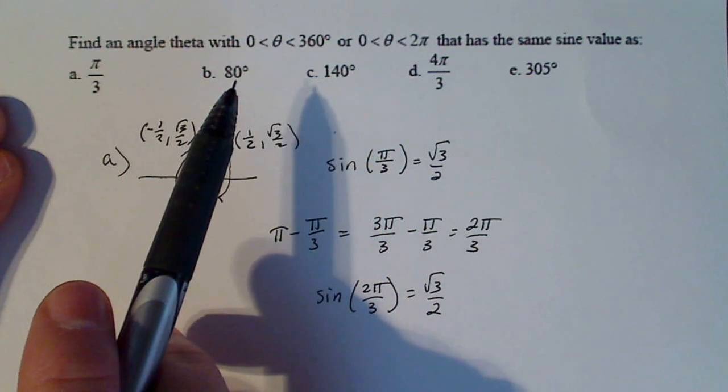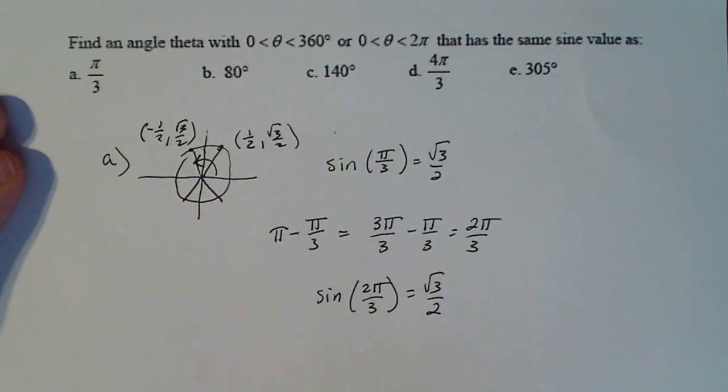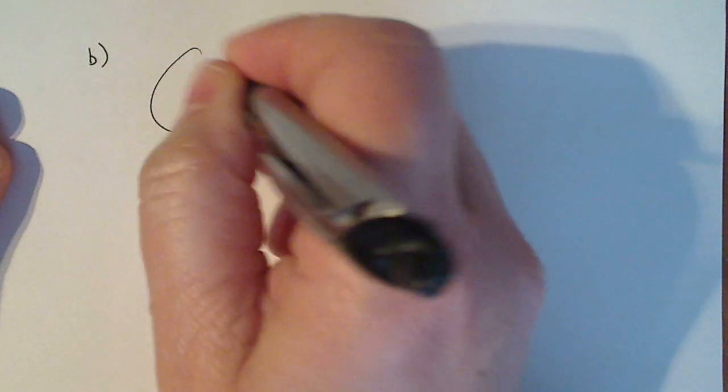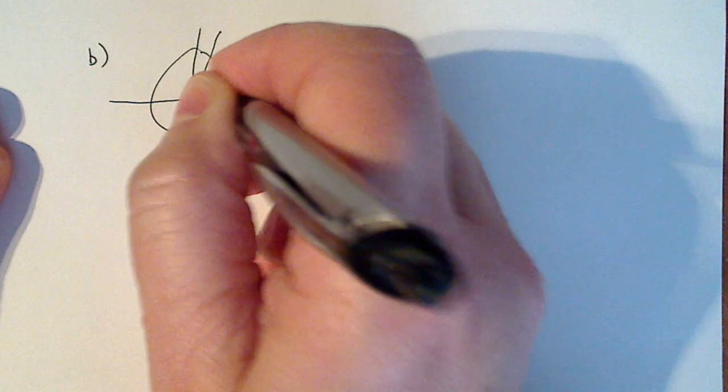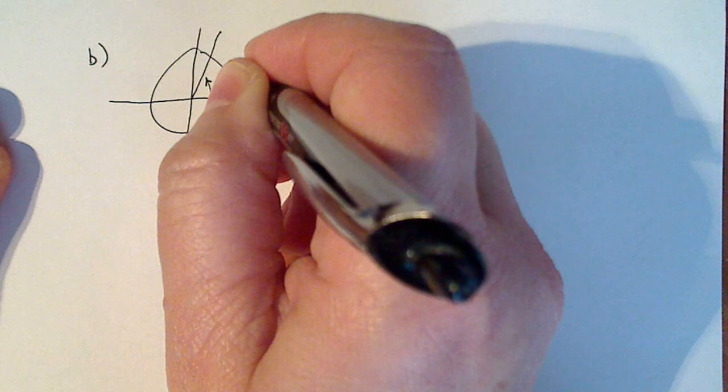Now I'll do a degree measure, 80 degrees, because that's not a standard one. And we don't know the ordered pairs the same way. So if I draw my circle again, 80 degrees is somewhere in this quadrant, pretty close to 90 degrees, but let's just pretend that that's 80 degrees.